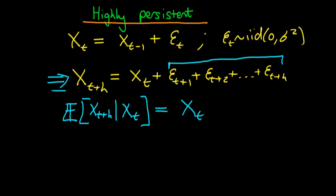What does this show? It shows that no matter how far in the future Xt plus H is, the best prediction I have for Xt plus H at time t is just the value of the series at that particular time. That's very indicative of the fact that we have a very highly persistent time series.